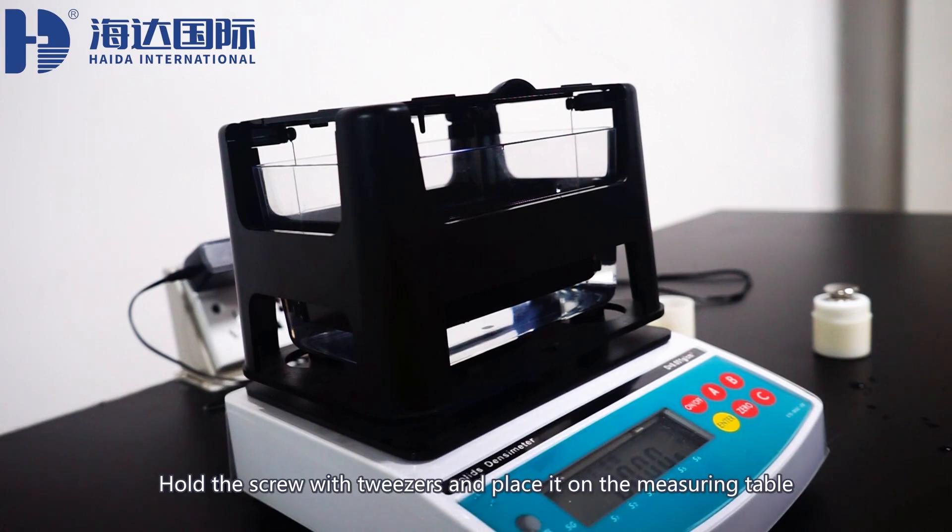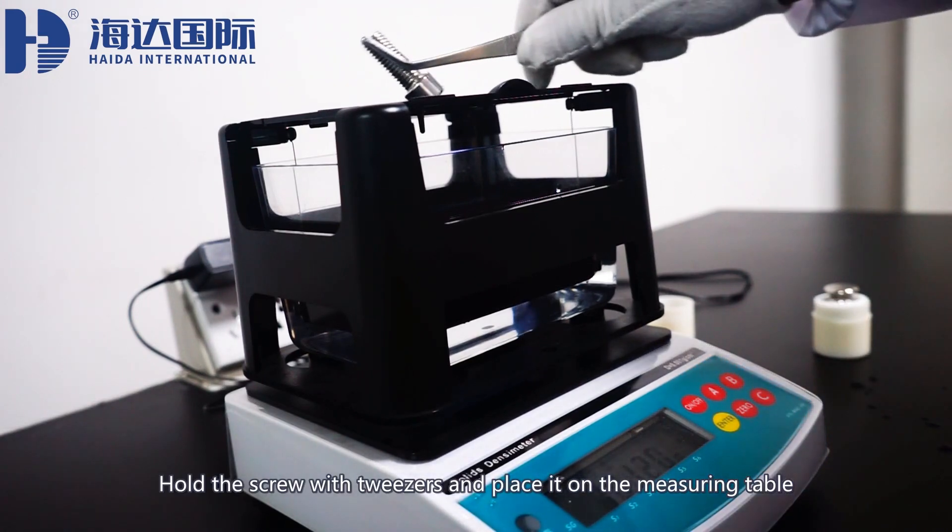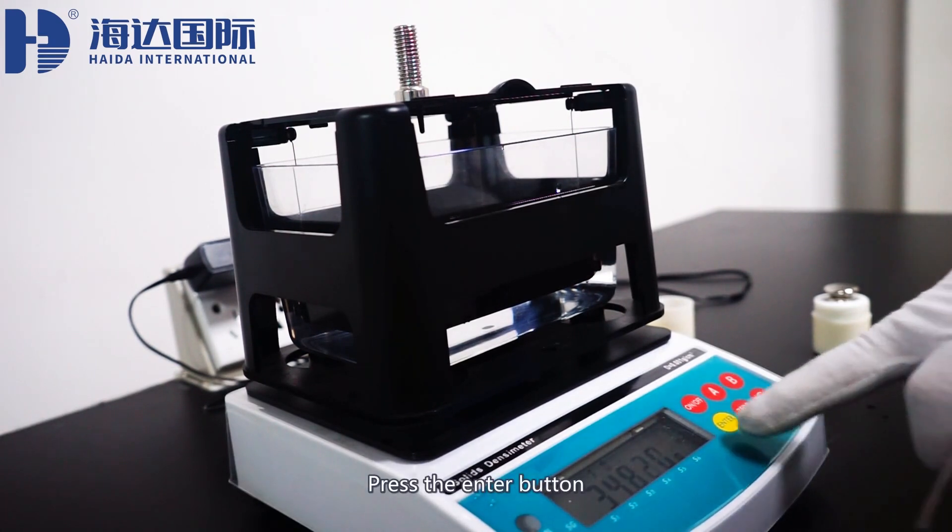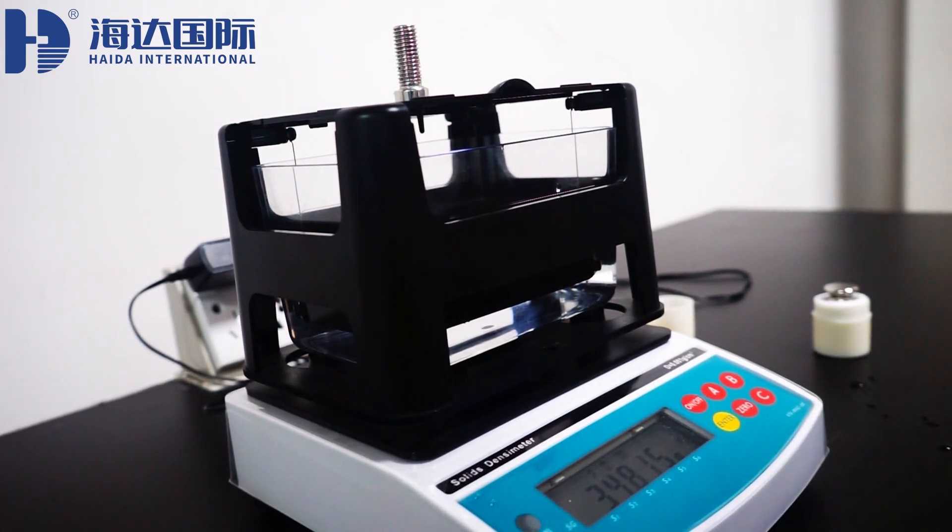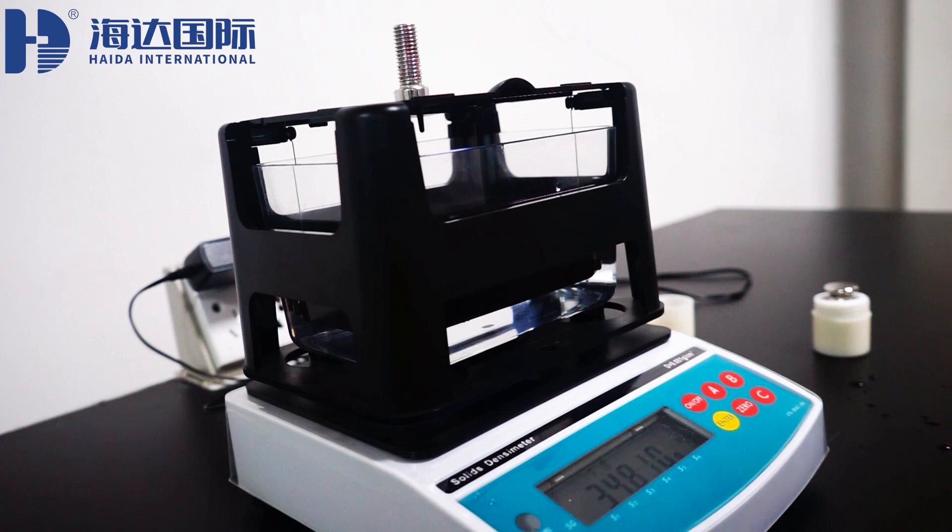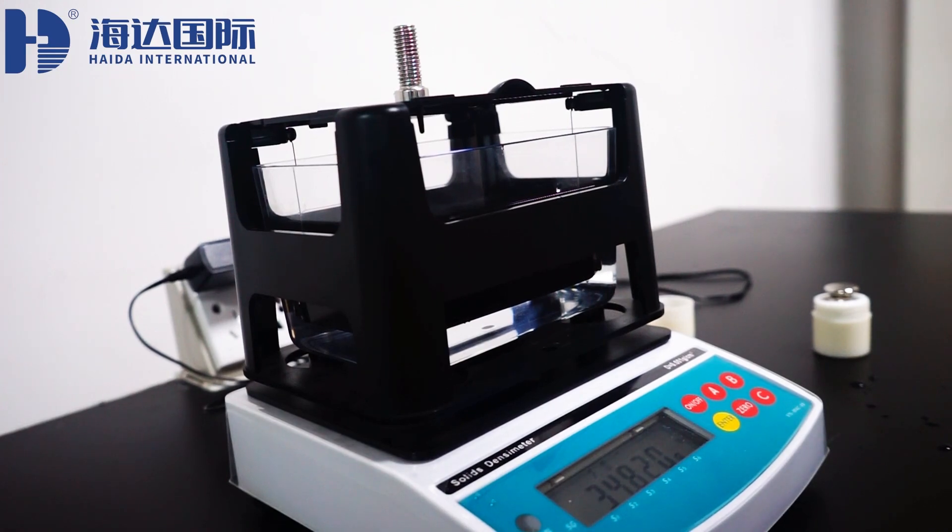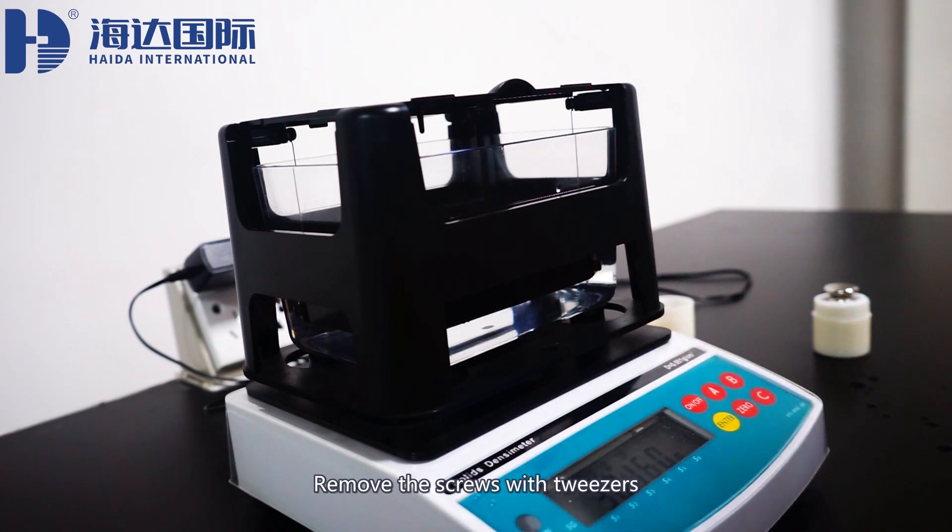Hold the screw with tweezers and place it on the measuring table. Press the enter button. Remove the screws with tweezers.